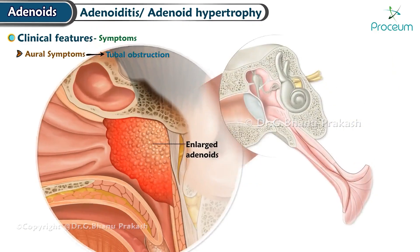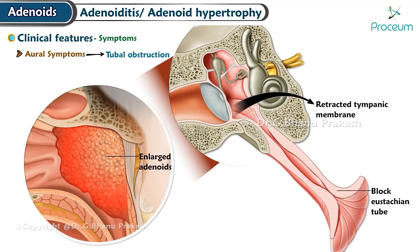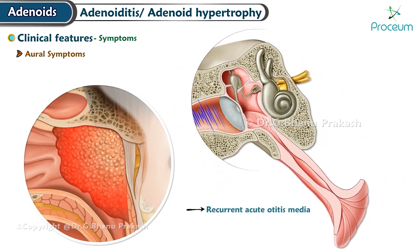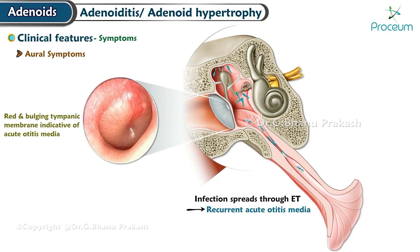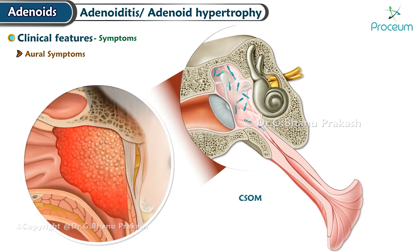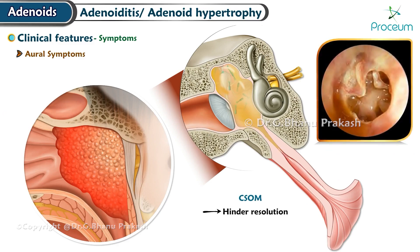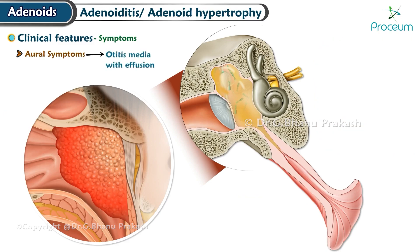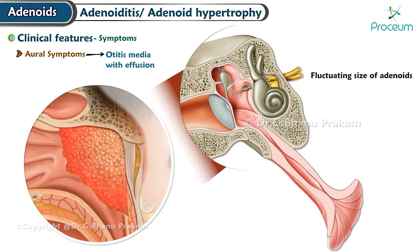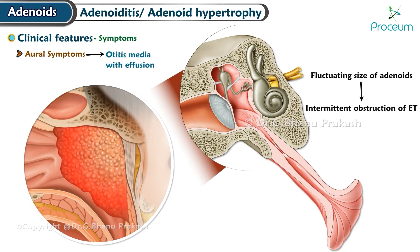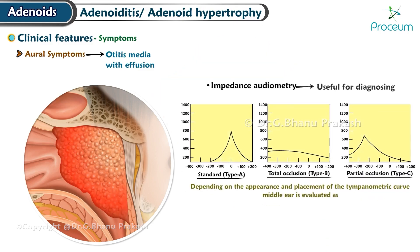Recurrent acute otitis media: infection can spread through the Eustachian tube, leading to recurrent episodes of acute otitis media. Chronic suppurative otitis media: the presence of infective adenoids may hinder the resolution of chronic suppurative otitis media. Otitis media with effusion: adenoids play a significant role in the development of otitis media with effusion in children. The fluctuating size of the adenoids can cause intermittent obstruction of the Eustachian tube, resulting in fluctuating hearing loss; impedance audiometry is useful for diagnosing this condition.